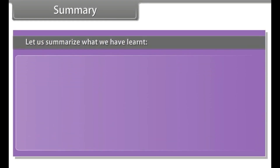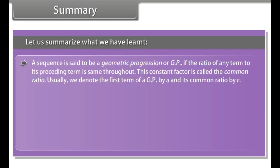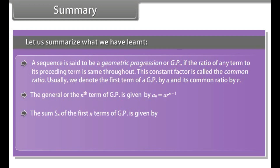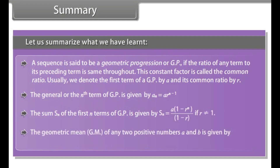Summary: A sequence is said to be a geometric progression or GP if the ratio of any term to its preceding term is the same throughout. This constant factor is called the common ratio. The first term is denoted by A and common ratio by R. The general nth term of GP is Aₙ = ARⁿ⁻¹. The sum Sₙ of the first n terms is Sₙ = A(1−Rⁿ)/(1−R). The geometric mean of two positive numbers A and B is G = √(AB), and the sequence A, G, B is a GP.